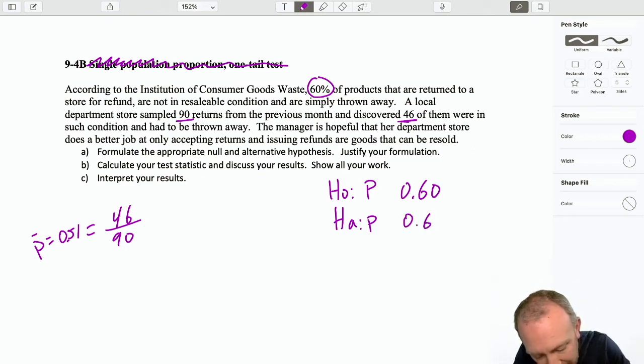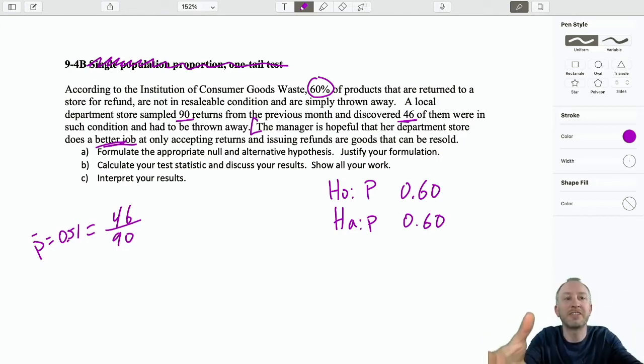Now are we doing an upper tail test, lower tail test, two tail test? Well this one's a little bit tricky. It says the manager is hopeful that her department store does a better job at only accepting returns that can be resold. So in this context we have goods that are being returned. They either go in the garbage or they're resold. Here we want to be doing a better job at accepting goods that can be resold, which means that the proportion of goods that go in the garbage is less. So p is less than 60%.